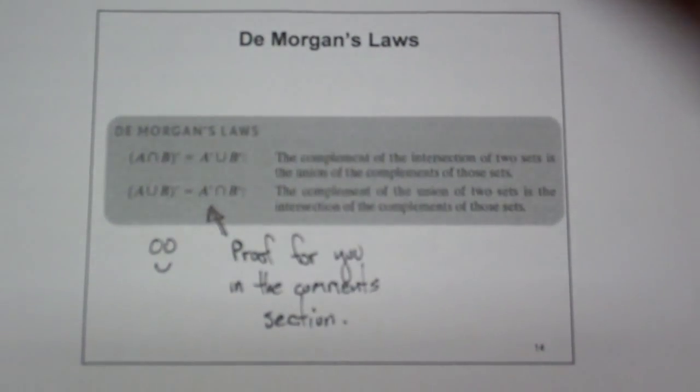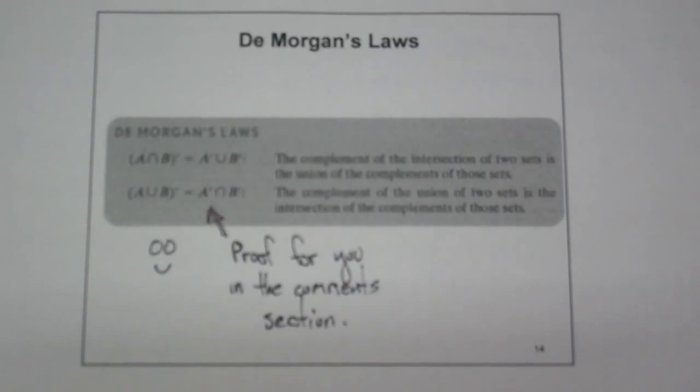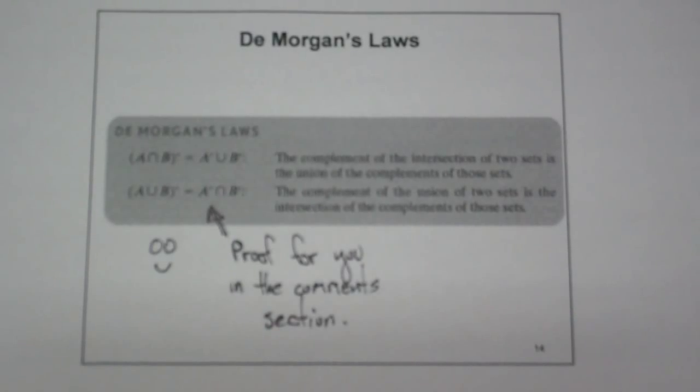That concludes our set operations with three sets, Venn diagrams, and DeMorgan's Law. Go on to 2.5.